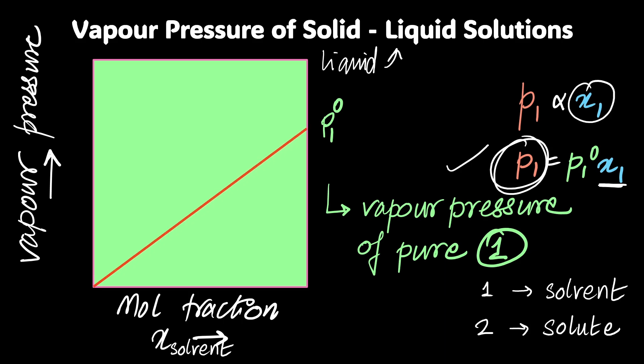So as the mole fraction of solvent increases, the pressure, the total pressure increases given by this beautiful orange line. I'm plotting with x₁ equal to 0 on the left-hand side and right hand side is x₁ equal to 1.